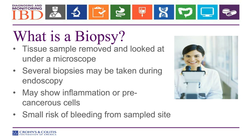Going back to biopsies: it's not enough to have an x-ray or a video capsule study picture to diagnose Crohn's or ulcerative colitis — you need tissue to make this diagnosis. A biopsy is a sample removed and looked at under a microscope, and several biopsies are even more helpful. The biopsies show certain kinds and types of inflammation, and these are also what we take during colonoscopy to look for precancerous cells and polyps. There is a very small risk of bleeding from biopsies, but in patients with otherwise normal blood counts who are not on blood thinners, that risk is extremely small and is outweighed by the benefit of having the tissue sample.